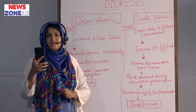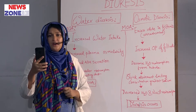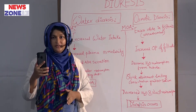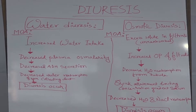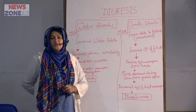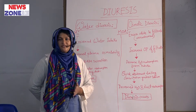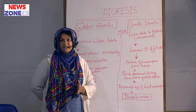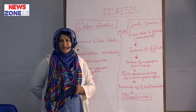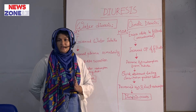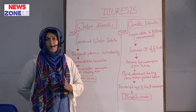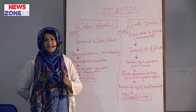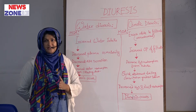Diuresis can be defined as the formation of large volume of urine, more than 3 liters per day. Diuresis always presents with polyuria. Polyuria means presence of more urine formation, which is more than 3 liters per day.